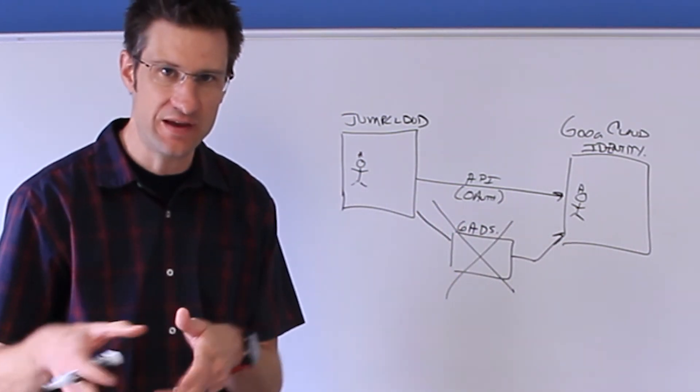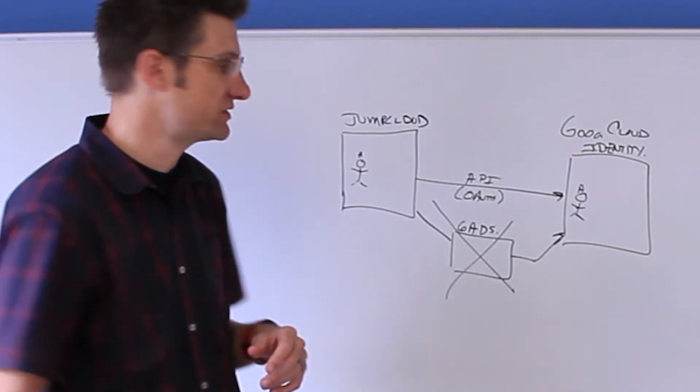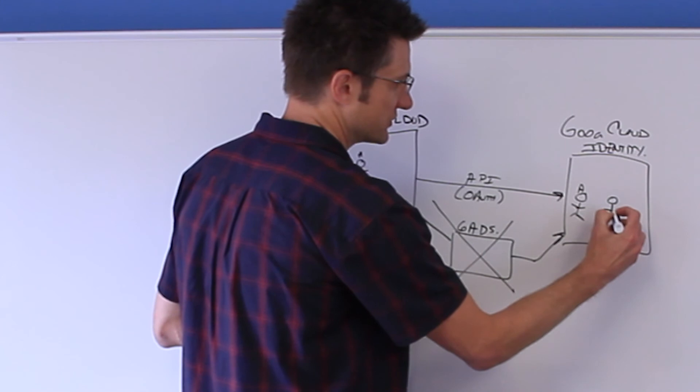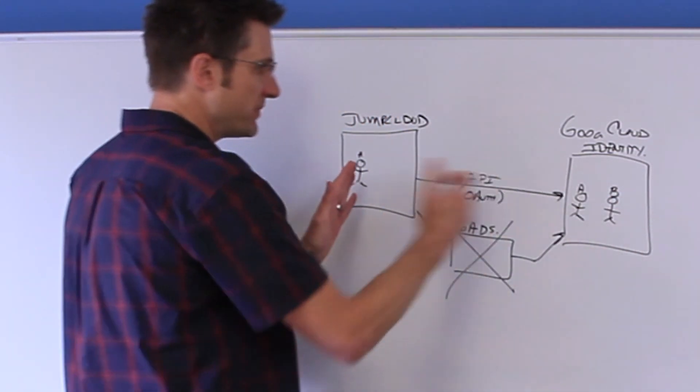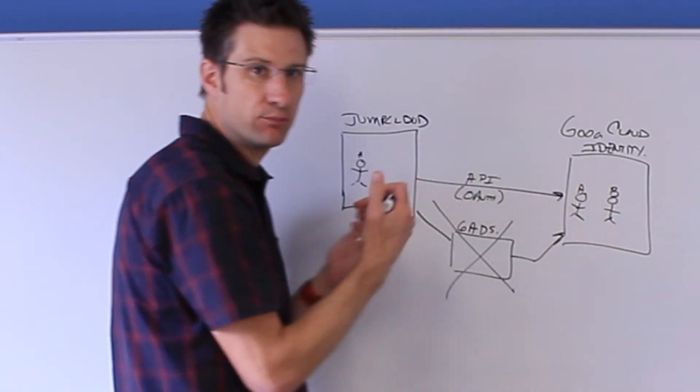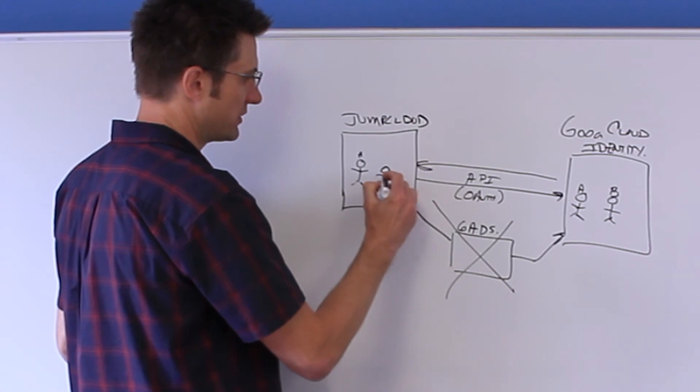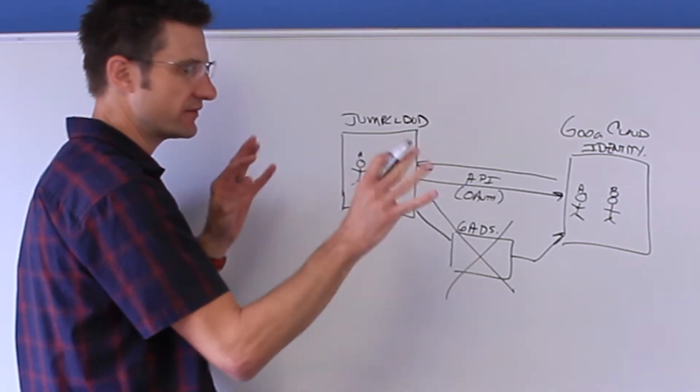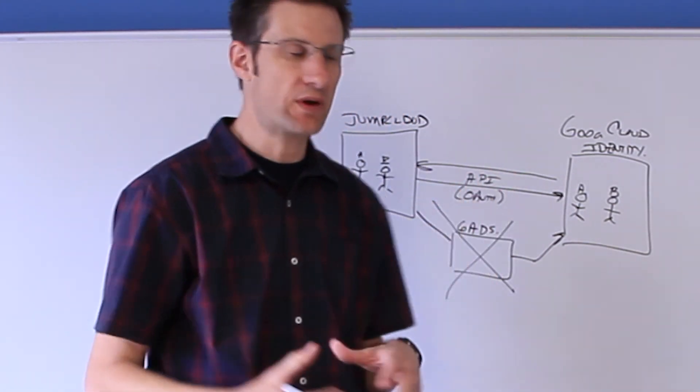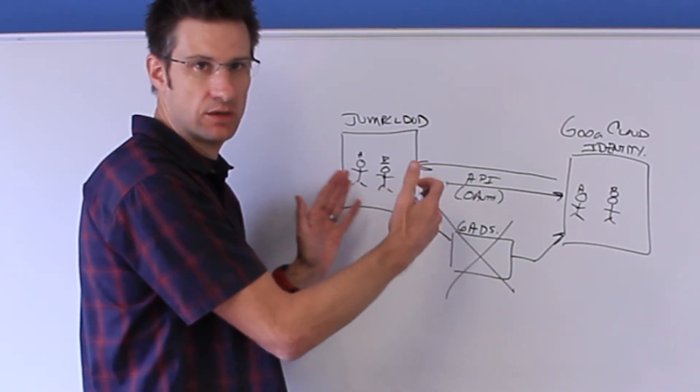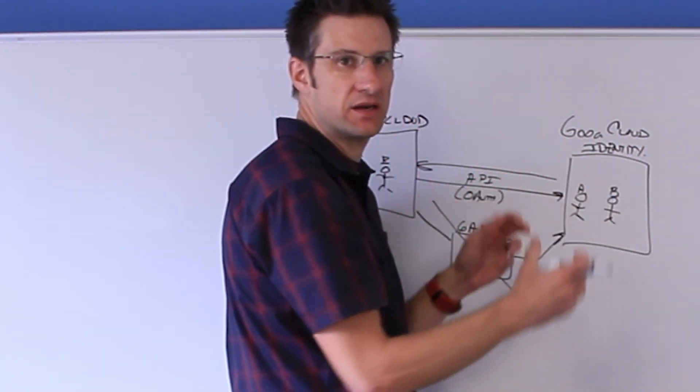But what happens if you've already got a whole slew of G Suite users, hundreds, if not thousands of them? We do the same thing in reverse, which is here you have user B, and our API integration not only does provisioning, but importation as well. So you are allowed to import those particular users. So now you have a constant synced record between your two directories, your master authoritative directory JumpCloud, and then the Google Cloud Identity directory underpinning things like G Suite.